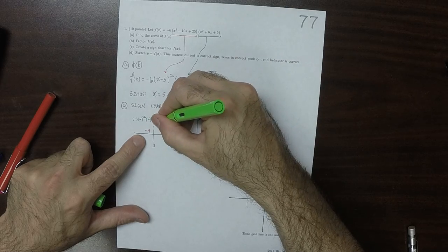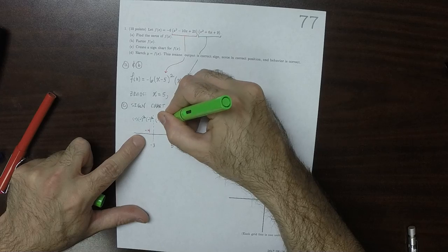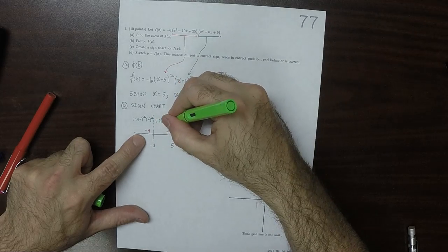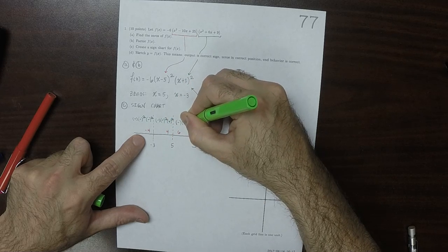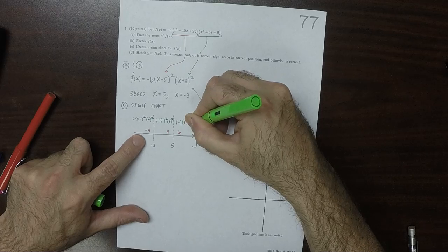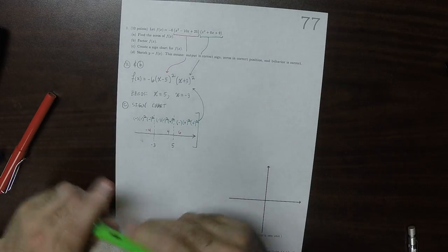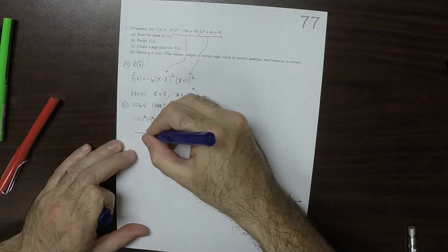Plugging in 4, that's negative 6 is negative, and then that term is negative squared, and that factor is positive squared, and then negative, positive squared, positive squared. So that the overall sign in each region is negative.